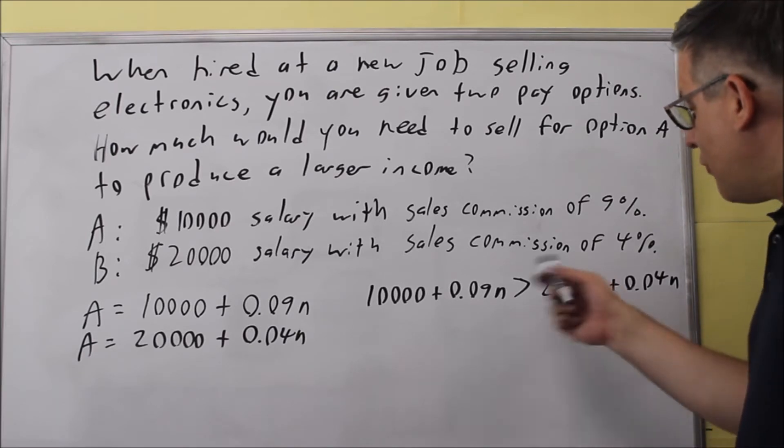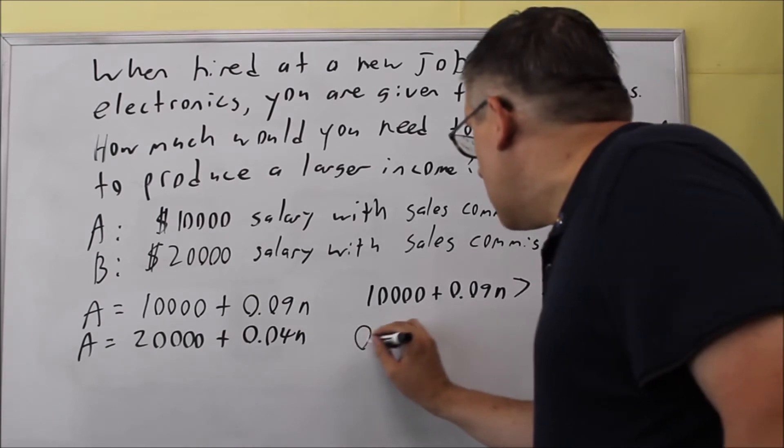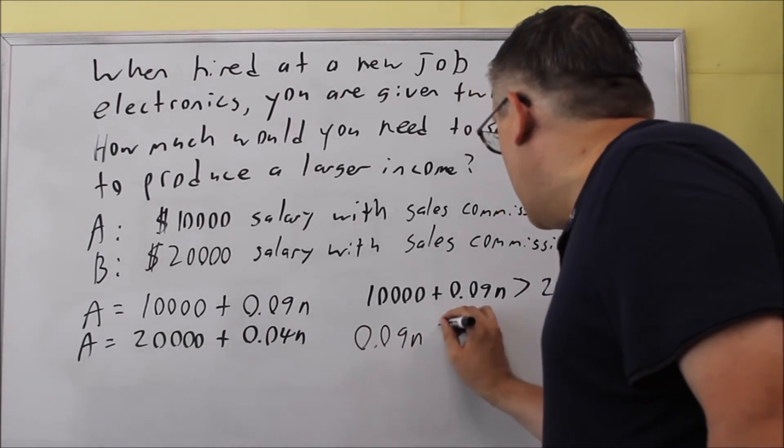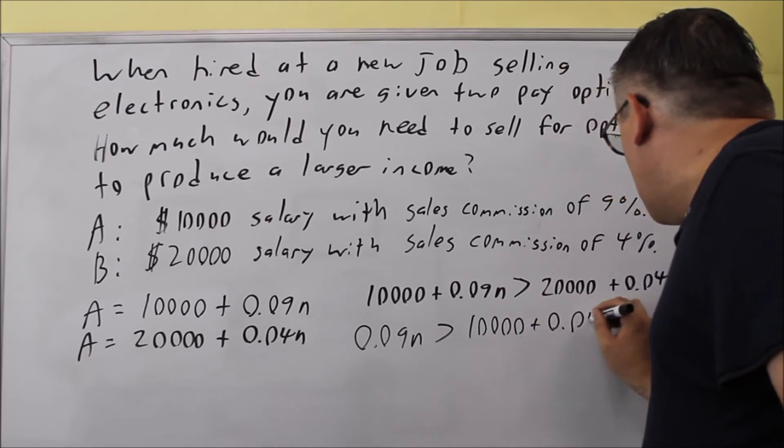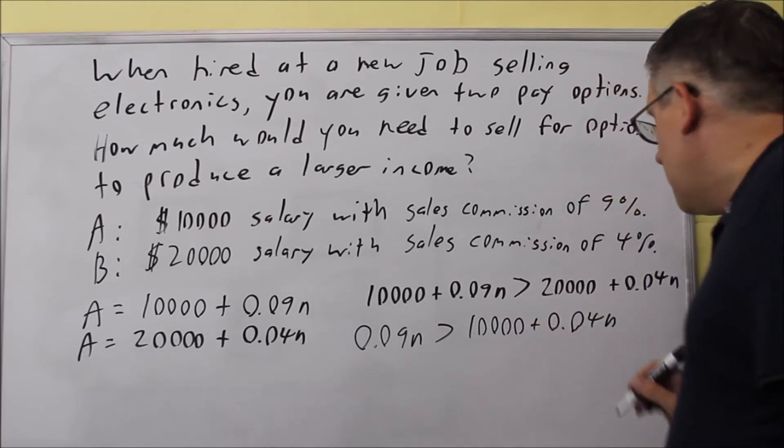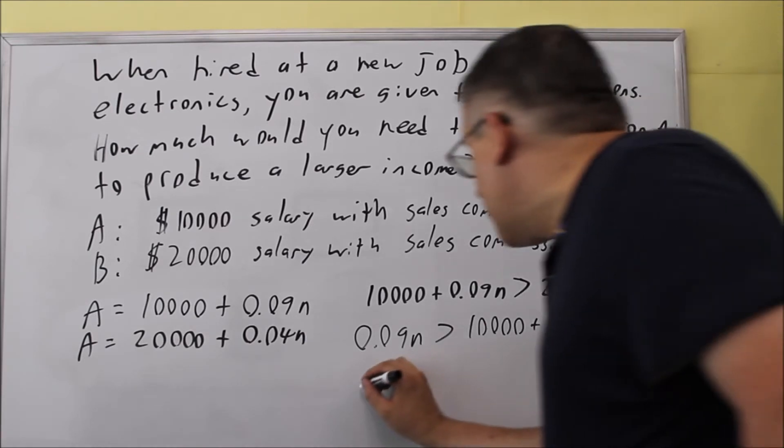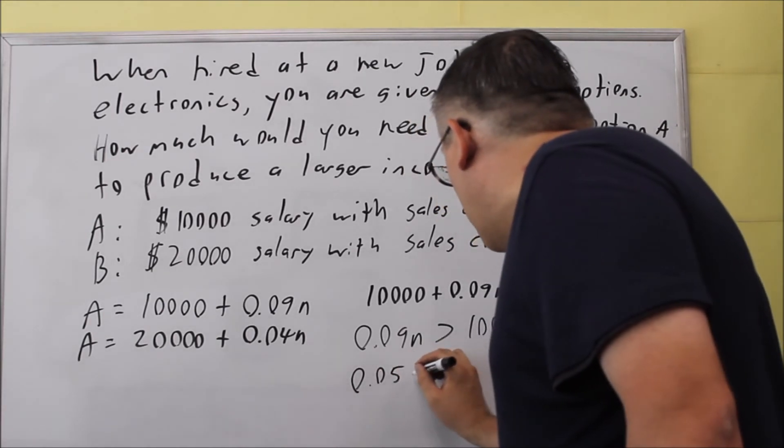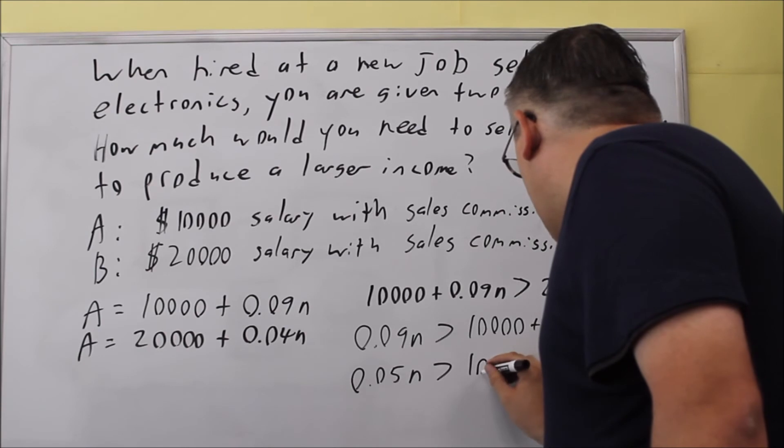Let's go ahead and solve for this. We're going to move the 10,000 over to the other side, so 0.09n is greater than 10,000 plus 0.04n. Next we want to move the 0.04 to the other side, so I'm going to subtract 0.04 from both sides and we end up with 0.05n is greater than 10,000.